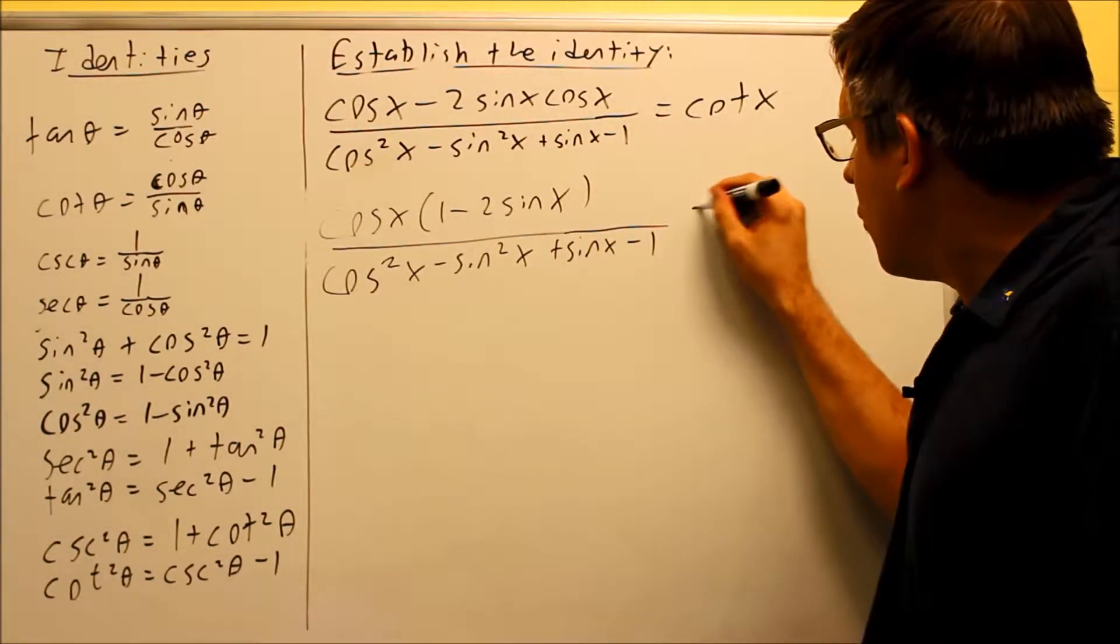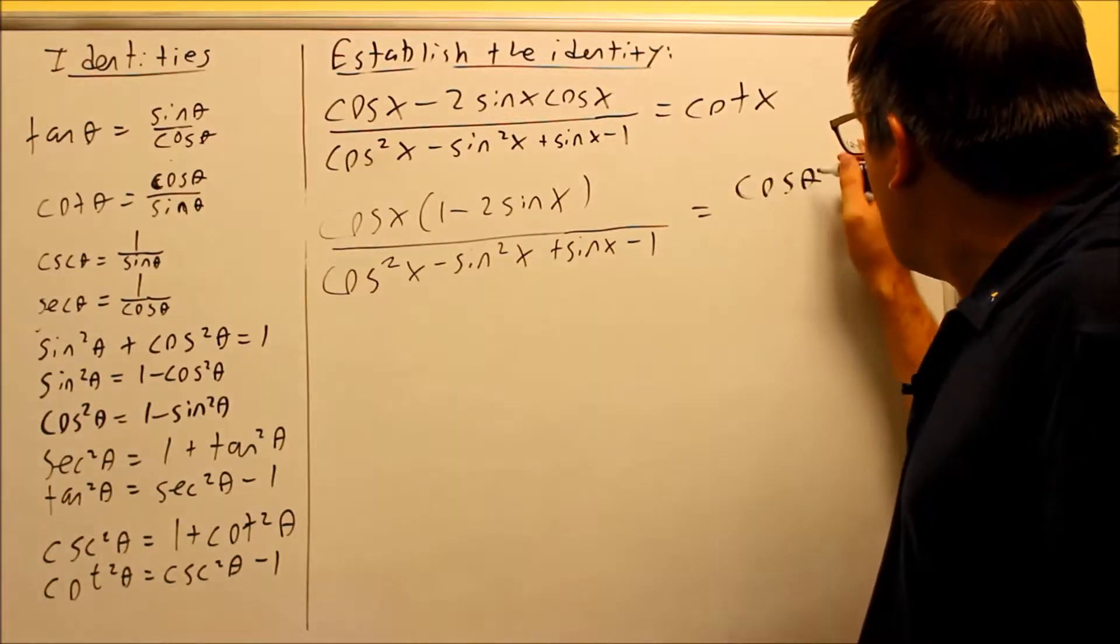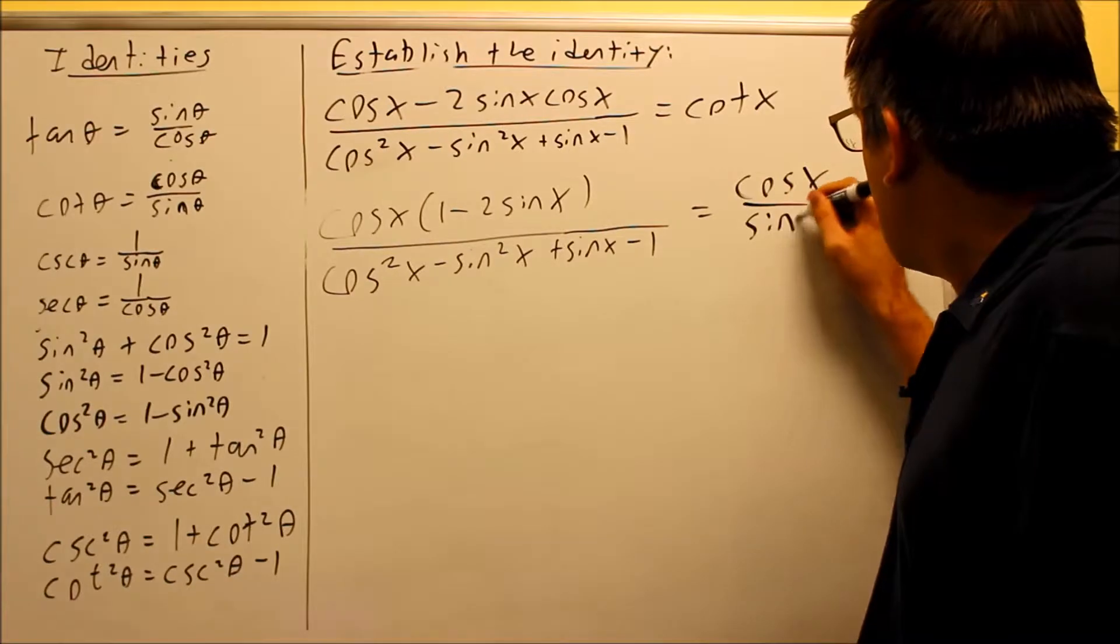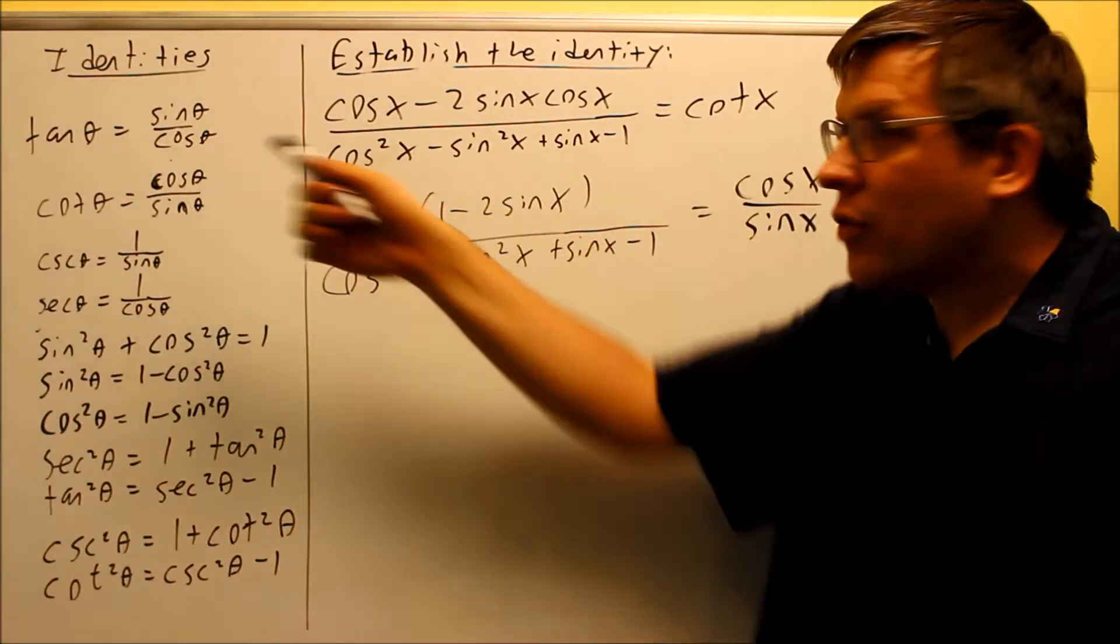So I can't do anything with the bottom one, and then this one we mentioned earlier, we can make this cosine x over sine x, because that's the identity that came right from here.